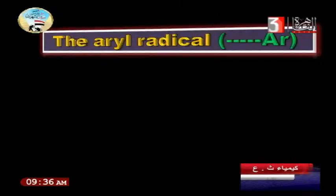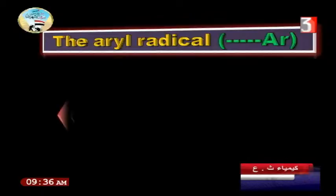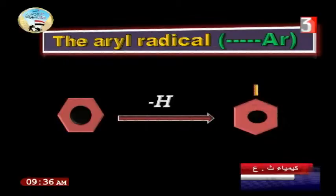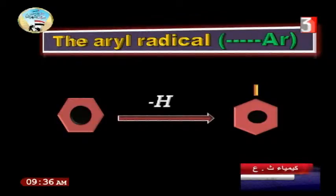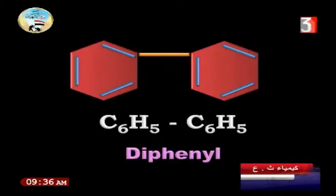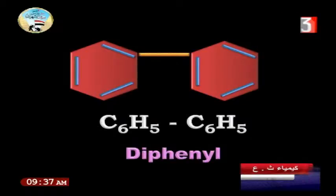Now, the aryl radical. When we say aromatic, we say aryl. Aryl refers to the shape of benzene — it means removing one hydrogen from the benzene ring, leaving a free bond. This bond means it can make a substitution reaction. An example of an aromatic compound containing a phenyl radical: phenyl radical means I have diphenyl — C6H5 bonded to C6H5 — because there is a common bond between two phenyl groups.